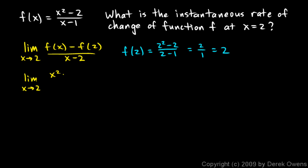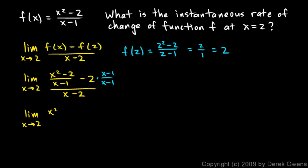We have the limit as x approaches 2 of [(x squared minus 2)/(x minus 1) minus 2] all over (x minus 2). To simplify, multiply the 2 by (x minus 1)/(x minus 1) to get a common denominator, giving the limit of [(x squared minus 2)/(x minus 1) minus 2(x minus 1)/(x minus 1)] over (x minus 2).